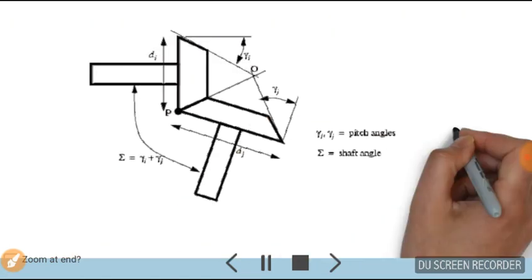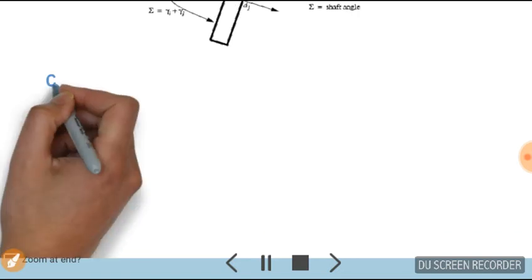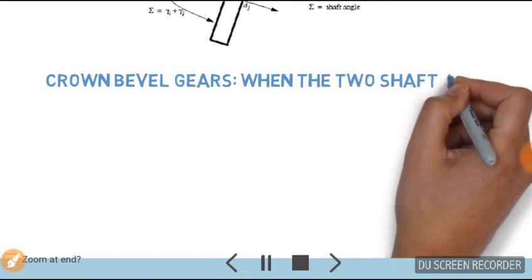When we are talking about crown bevel gears, when the two shaft axes intersect at an angle greater than 90 degrees.